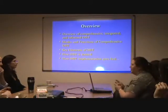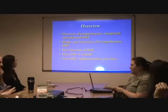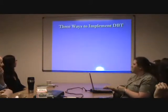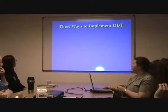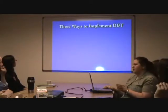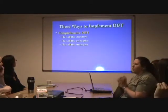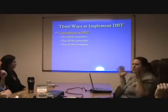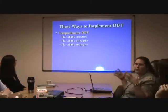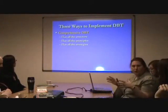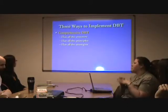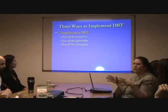We'll also cover how we train in DBT and how DBT implementation can go bad — what are all the things you want to know ahead of time so you don't repeat mistakes. There are three ways to implement DBT. The standard is what we call comprehensive DBT — by comprehensive we mean you've got the whole thing: all the structure, all the principles, all the strategies, trying to do the whole thing to adherence.